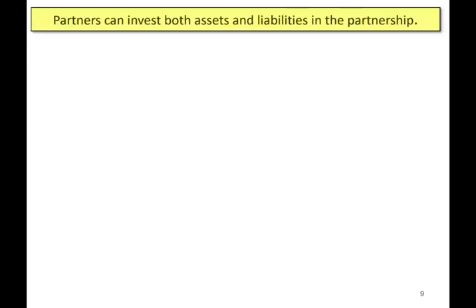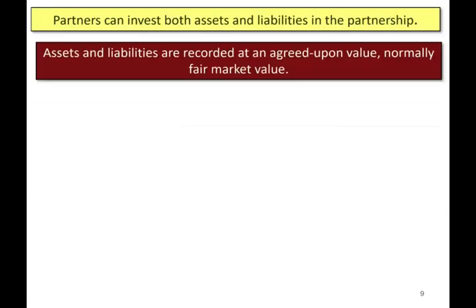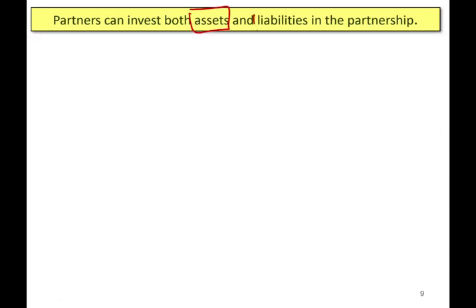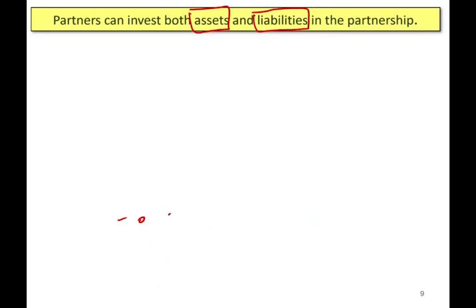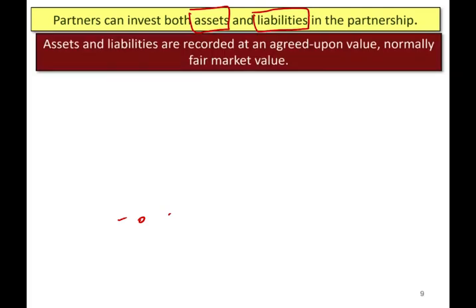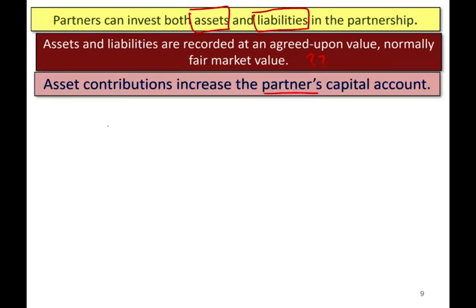When the partners invest in a business, they can invest both assets and liabilities. For example, you might contribute a piece of equipment, but you might have a loan against that piece of equipment. So when you contribute the piece of equipment, the loan comes with it. Assets and liabilities are recorded and agreed upon at fair market value.